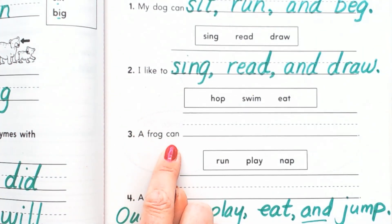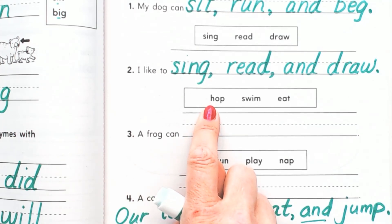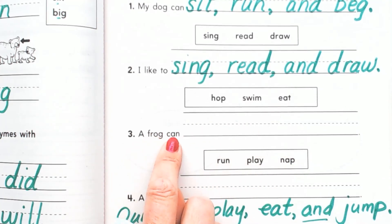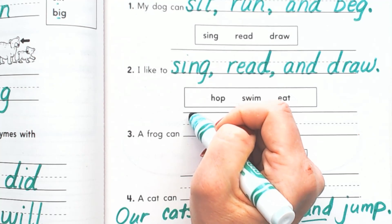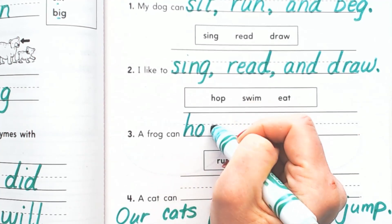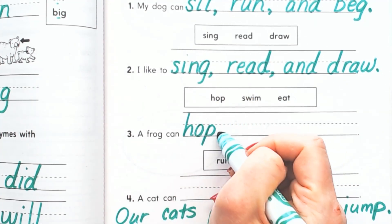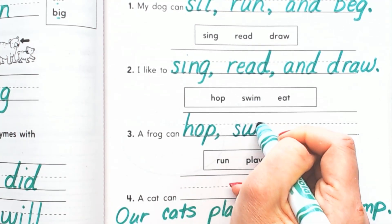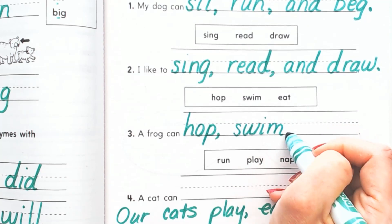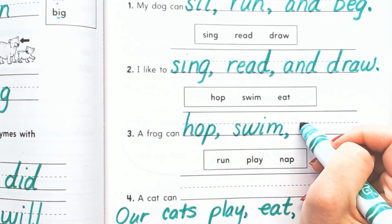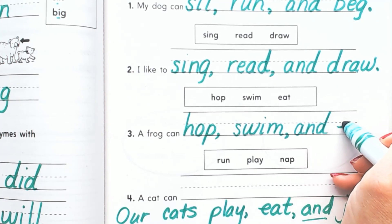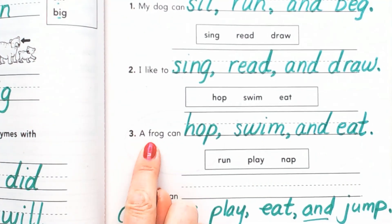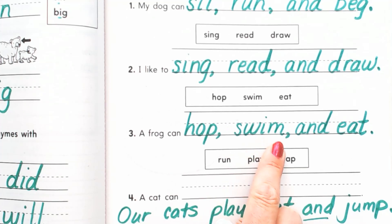A frog can, let's see what a frog can do. What's the list of things he can do? Hop, swim, and eat. So I'm going to write down the list of things he likes to do and I'm going to put the commas and the word 'and' in the correct place. A frog can hop, comma, and I put a finger space, swim, comma, and eat. Period. A frog can hop, comma, swim, comma, and eat.